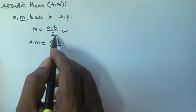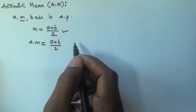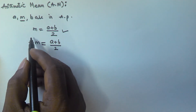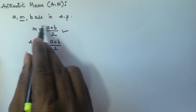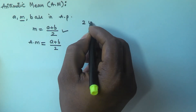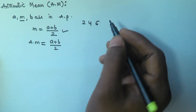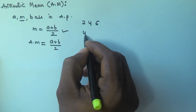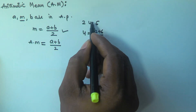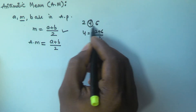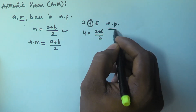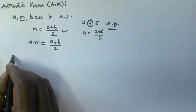So in the same manner, in general, this is the arithmetic mean formula. For example, if 2, 4, and 6 are in arithmetic progression, then 4 is equal to (2 + 6) / 2. So 4 is called as the arithmetic mean of these three numbers which are in arithmetic progression.